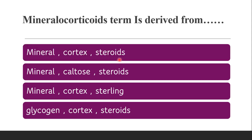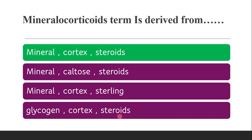Next question: similarly, the term mineralocorticoid is derived from — whether it is mineral, cortex, steroids; mineral, kaltos, steroids; mineral, cortex, sterling; or glycogen, cortex, steroids. The correct answer is mineral, cortex, steroids. Mineral stands for mineral, cortic stands for cortex, and coids stands for steroids.